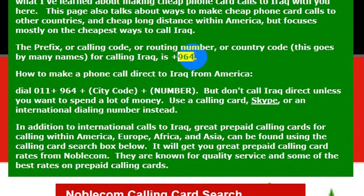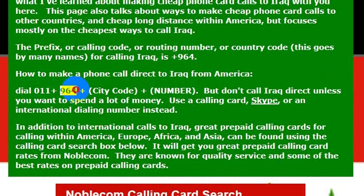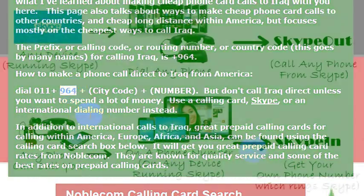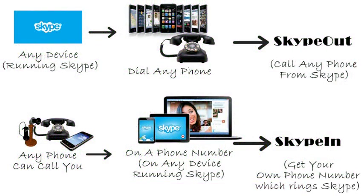family member, or maybe a hotel in Iraq, what you would do is dial the international dialing code, which is 011, and then the country code, which is 964. But I wouldn't really recommend calling direct, because your phone company will charge you a lot of money.